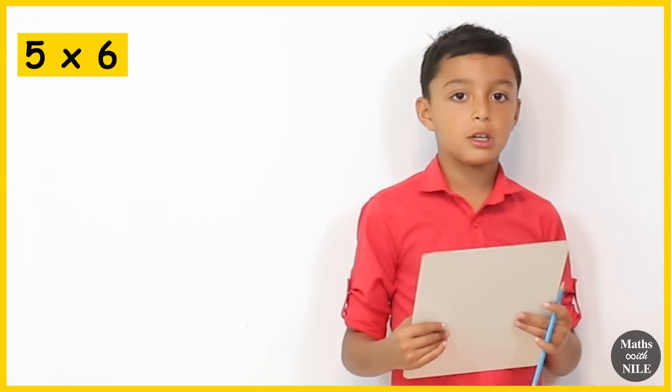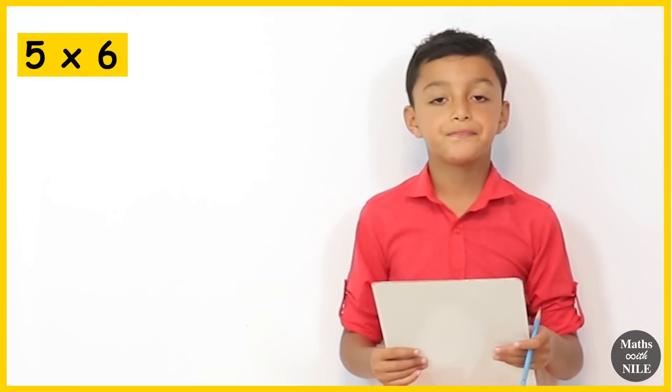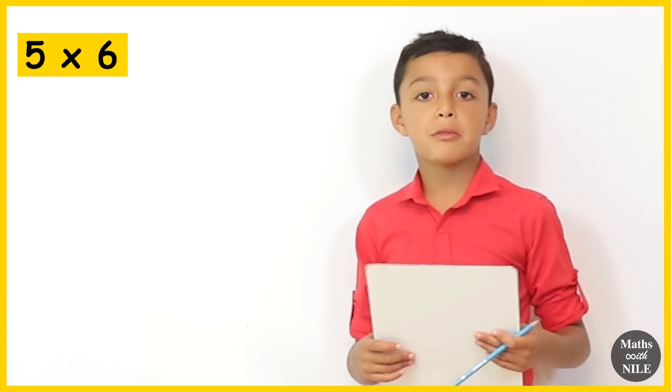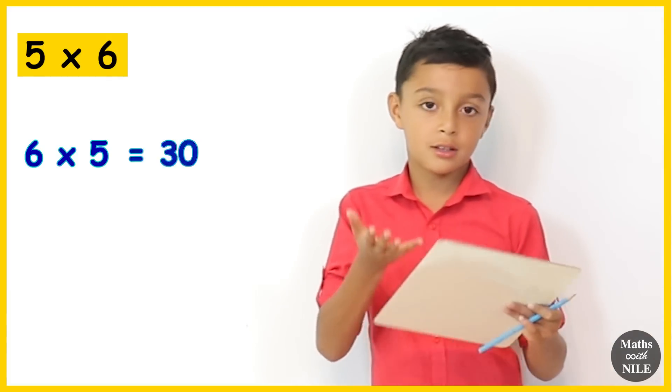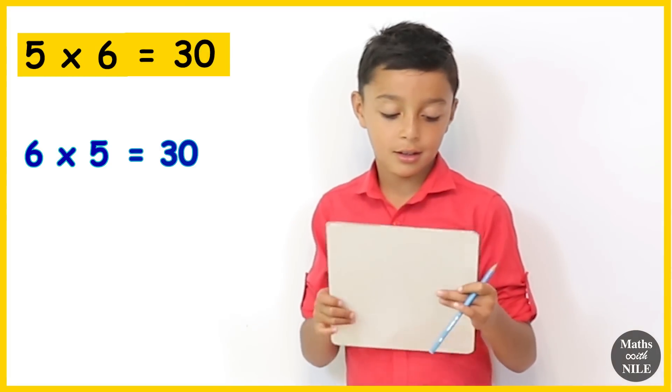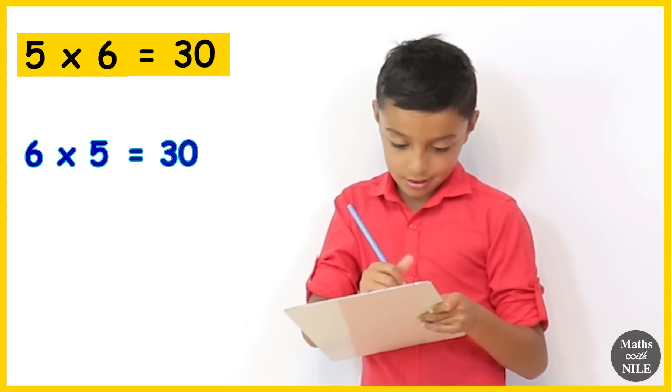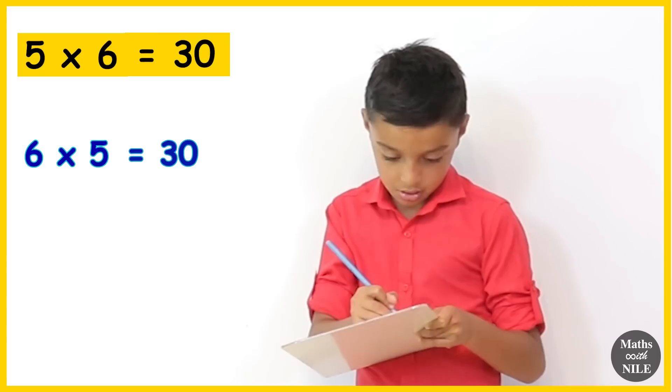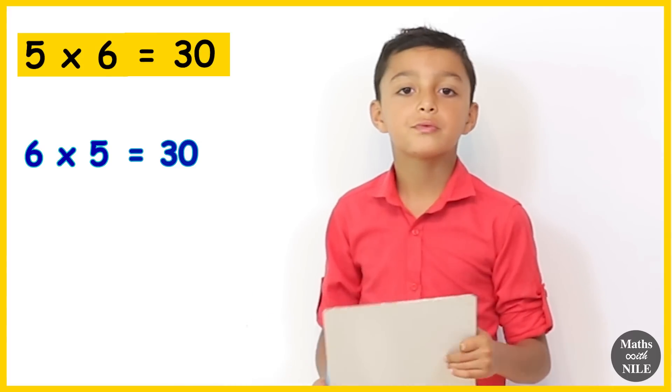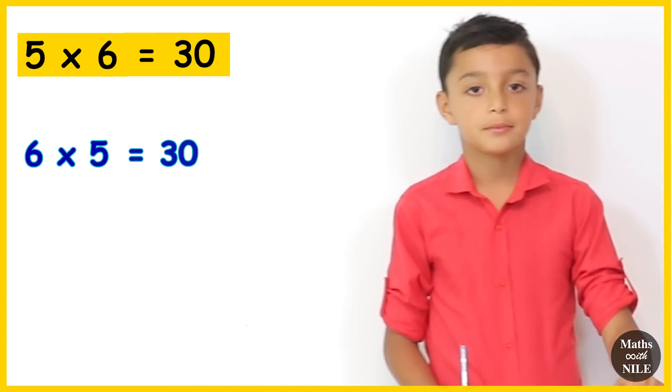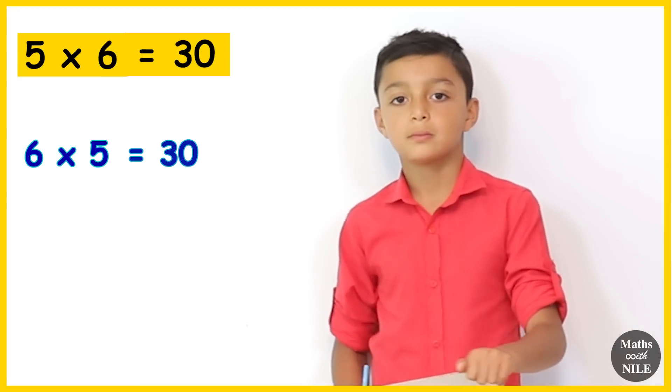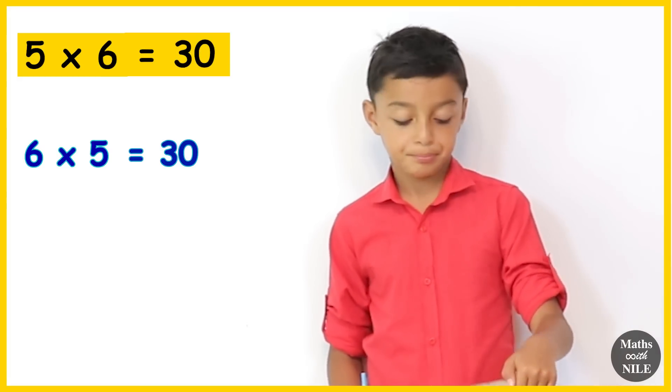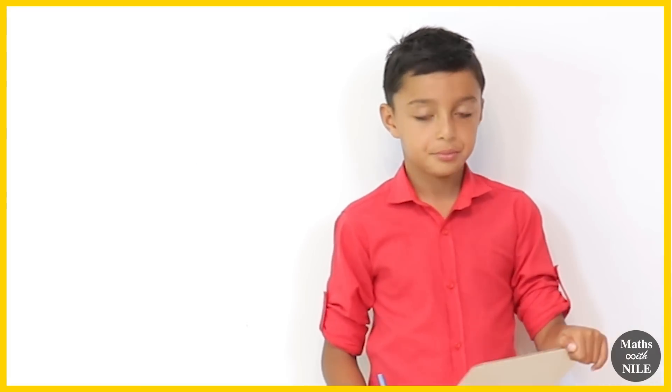5 times 6. And can you find an easy way to read this out? You can do 6 times 5 and you can do 5, 10, 15, 20, 25, 30. So the answer is 30. Yes. So a lot of us know or we learn how to count up in 5s pretty early. And it's very easy to count up in 5s. So because multiplication is commutative, swapping it around makes it easier to calculate.